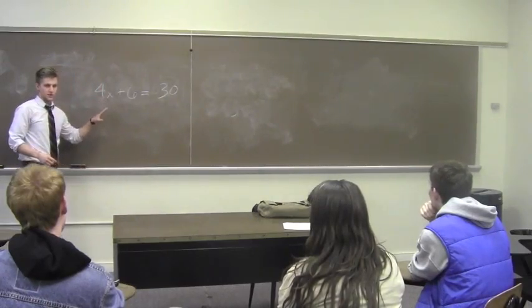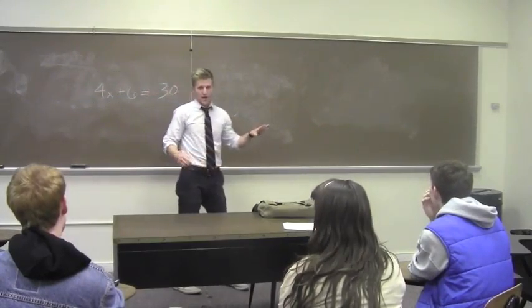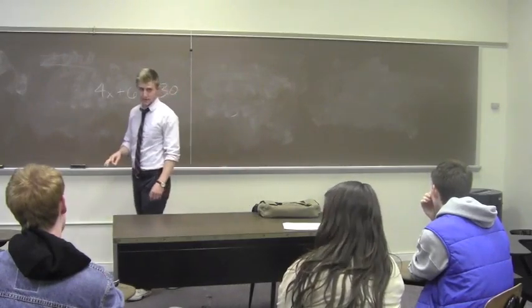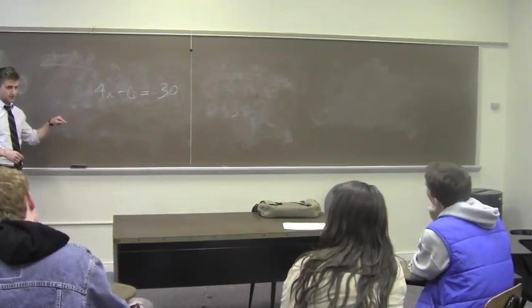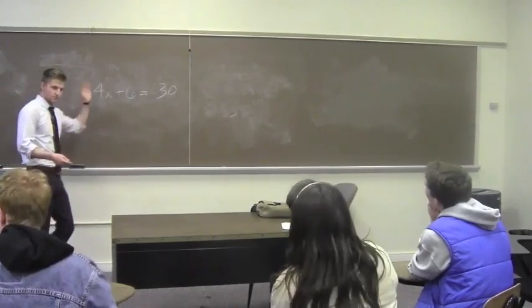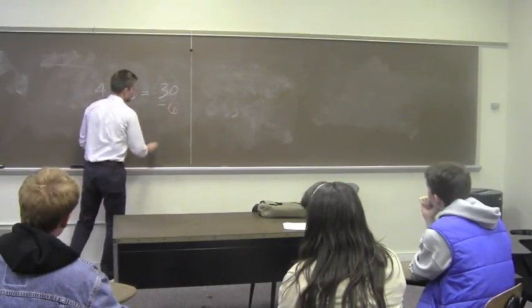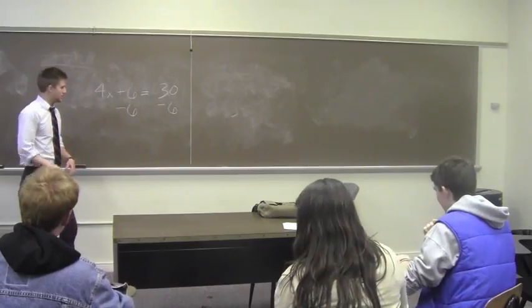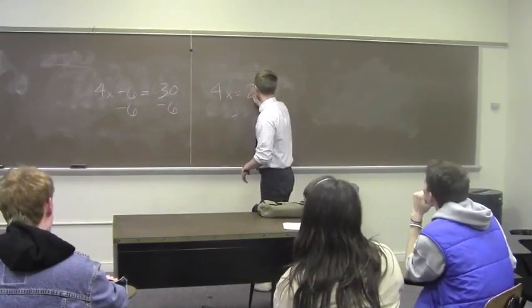Now we're trying to get the x by itself, right? Since both sides need to be equal, we have to do the same thing to each side. How would we go about getting rid of the 6? Subtract it from both sides. You're trying to get rid of that, nullify that. So we're going to subtract 6 from both sides. What's the equation we have now? 4x equals 24.